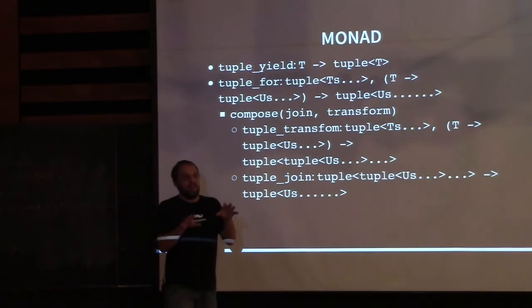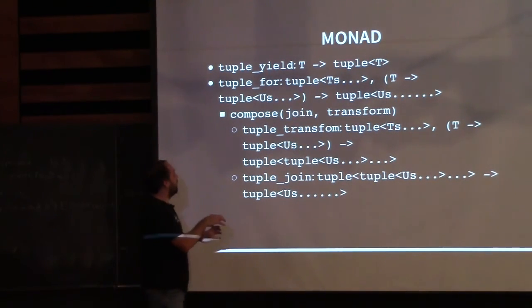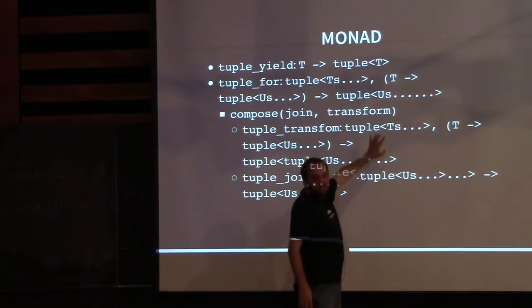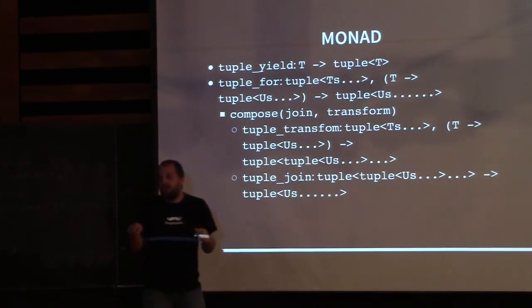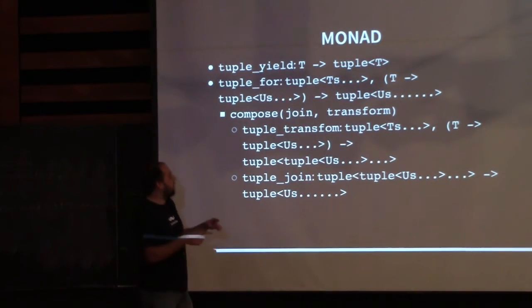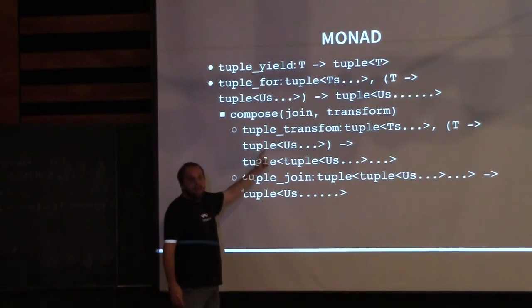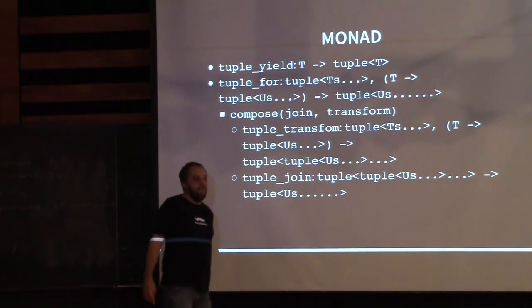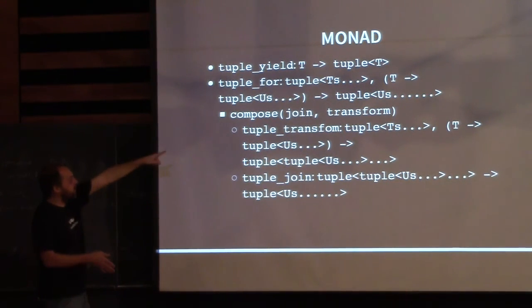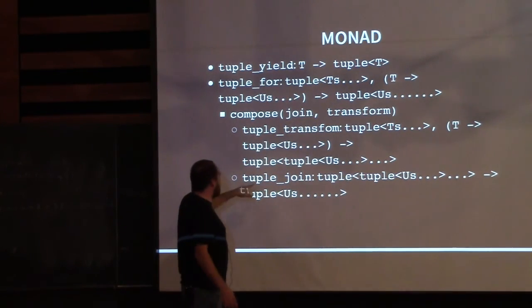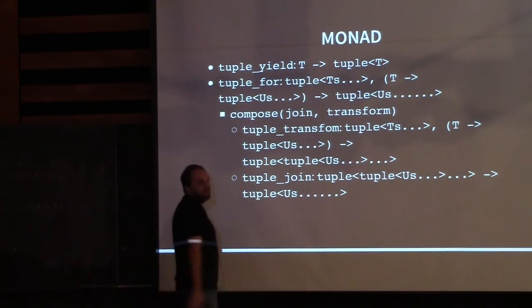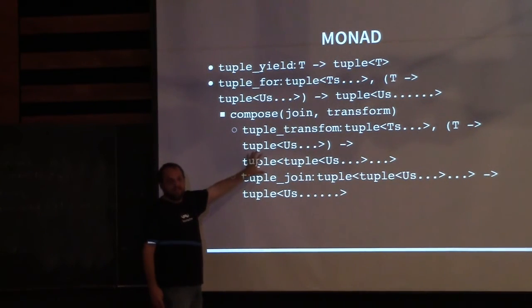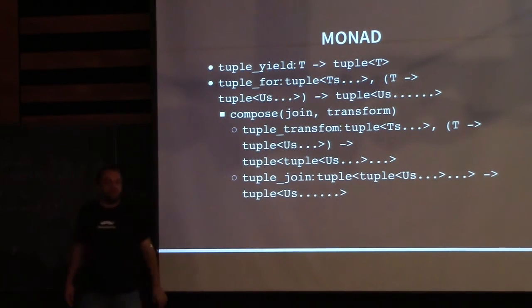Dividing tuple_for into transform and join: tuple_transform we've already defined. For tuple_for, the mapping function returns a tuple of U's, so after transforming each T into a tuple of U's we get a tuple-of-tuples. We then use tuple_join to flatten it into a single tuple. We've already defined tuple_transform, so we're halfway there — we just need to define tuple_join.